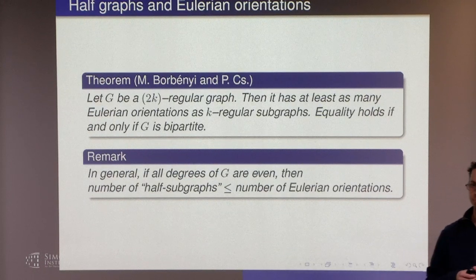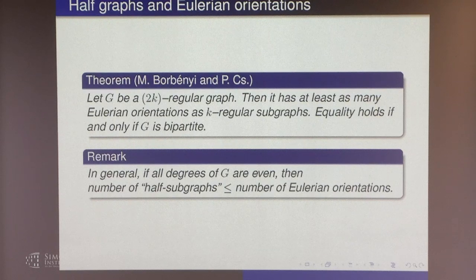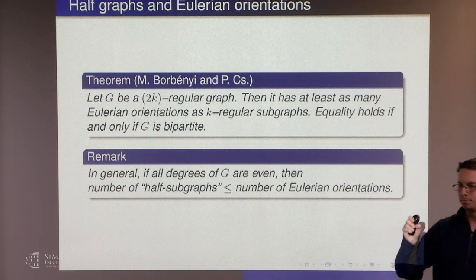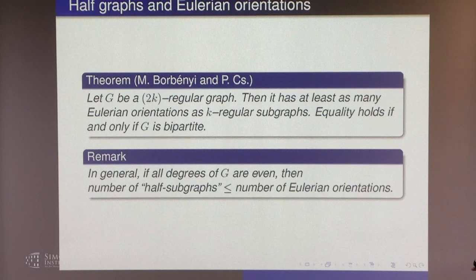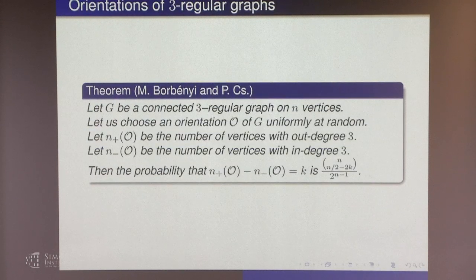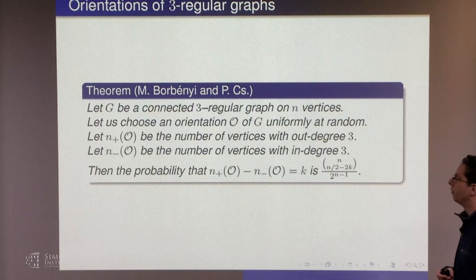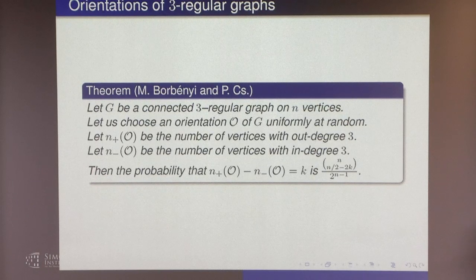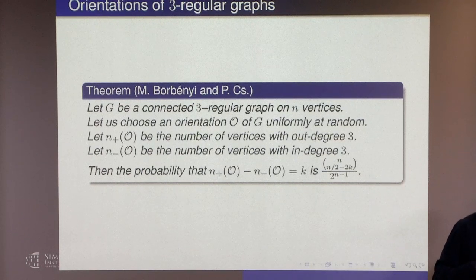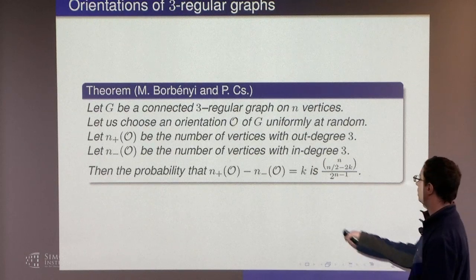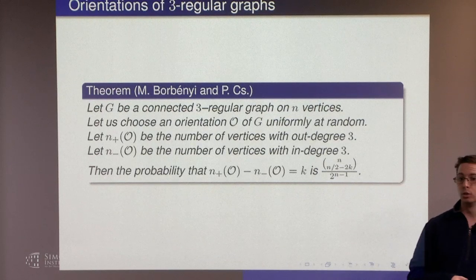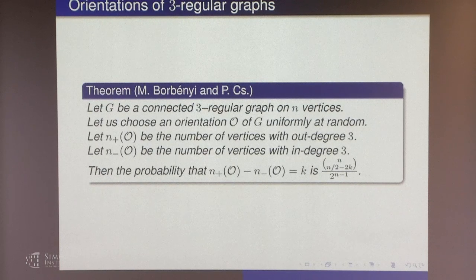Actually this is true more generally: if all degrees are even, you can consider the half-subgraph where the degree is exactly half of the original graph, and the number of Eulerian orientations is always at least as large as the number of these half-subgraphs. Regularity is not really important; I will show the proof for four-regular graphs because you can imagine the whole proof.